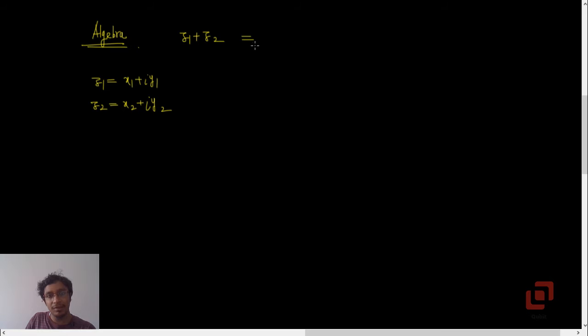To add these two complex numbers, we will add their real parts and add their imaginary parts. If we subtract z2 from z1, then we will subtract x2 from x1 and y2 from y1. Remember, this sign remains positive.